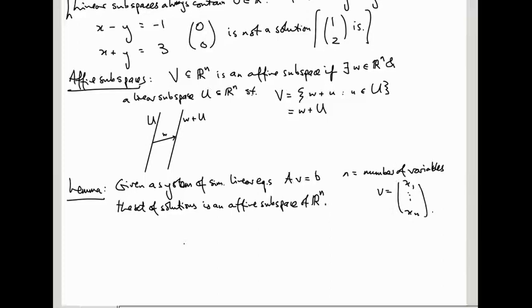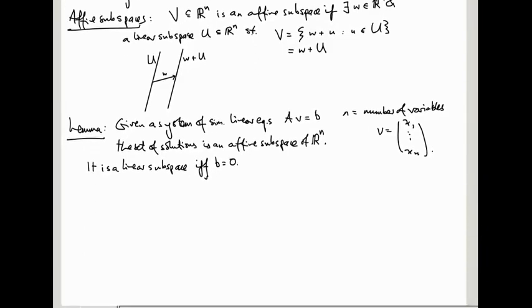Note that it is a linear subspace if and only if B is 0. So this IFF with two Fs is if and only if. It's some silly shorthand thing. Okay, let's prove this.